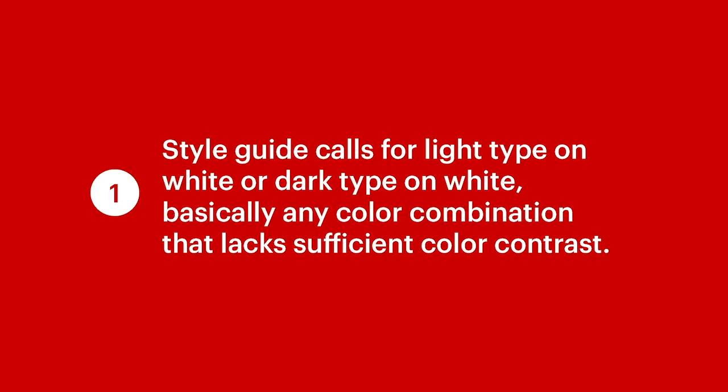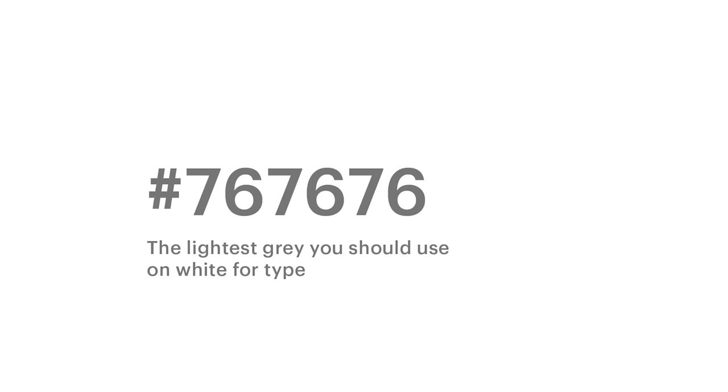Example one: the style guide calls for light type on a light background or dark type on a dark background — basically any instance where there's not sufficient contrast. There are many tools to help you with contrast ratio. A fun fact, because designers love gray type on white, is that hex code 767676 is the lightest form of gray you can use against a white background and still gain a Level AA grading at size 16 text — the very smallest you should be making your body copy. So you can still have those sexy grays, just do it in an accessible way.